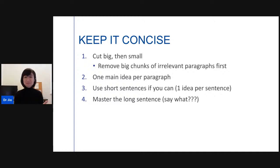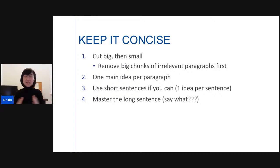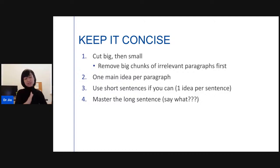Third, use short sentences — keep one idea per sentence. But also master the long sentence, because long sentences do have their place in a research paper. Long sentences are useful when you are writing a list. For example, 'these are the variables we used in the research' and then you list ten things in one long sentence — you don't separate it into five different sentences. Begin with 'these are the few things we are looking at' and then list them out.